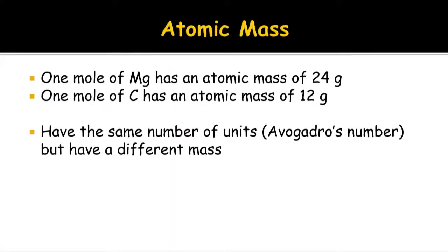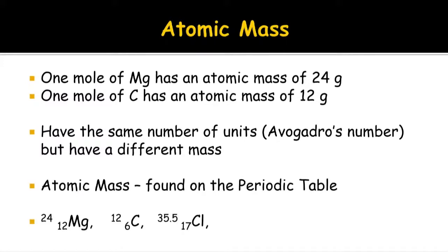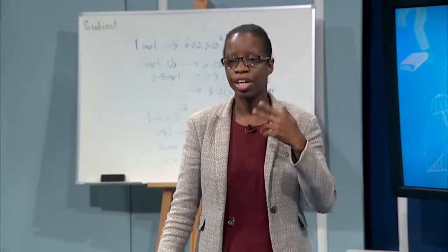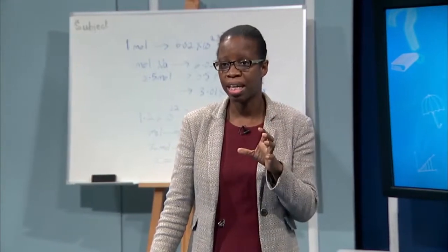On your periodic table, you can see the atomic masses of elements. For example, magnesium has an atomic mass of 24 and carbon has an atomic mass of 12. A mole of magnesium and a mole of carbon both contain Avogadro's number — 6.02 × 10²³ particles — the same number of particles, but of course they have a different mass.